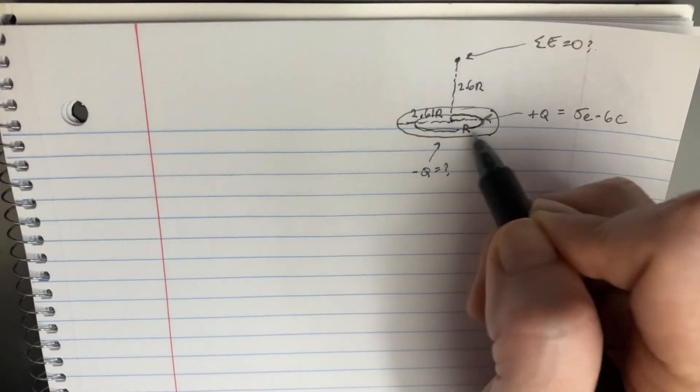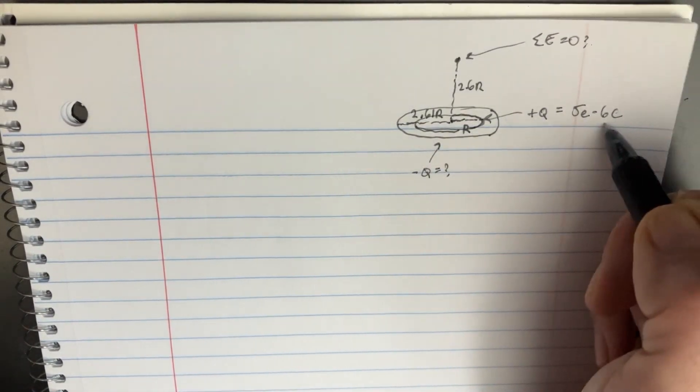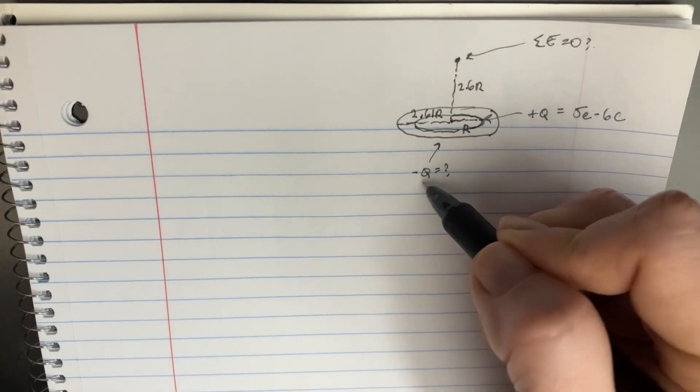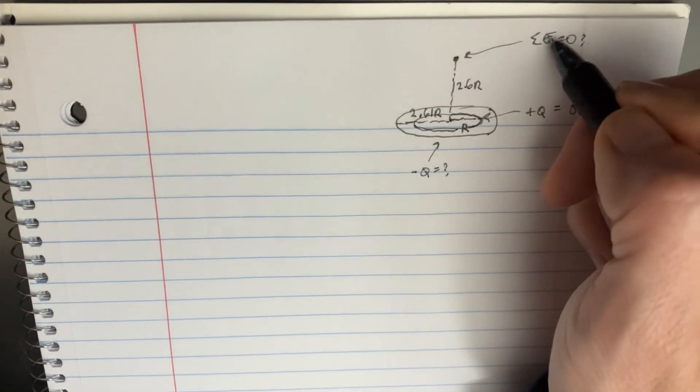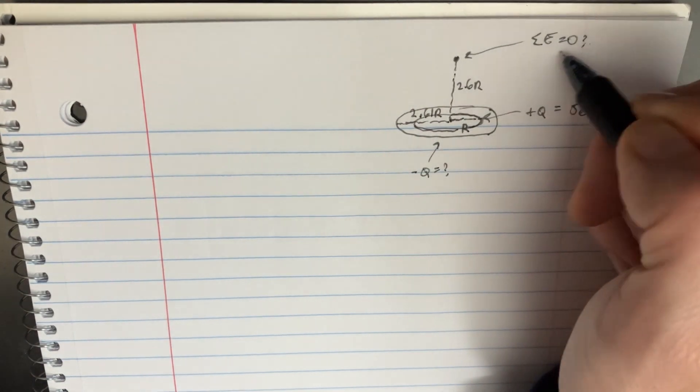So in this problem, we have two rings, one that has a positive charge and one that has a negative charge. They're trying to affect this particular point, and we want to know when does the electric field equal zero there.